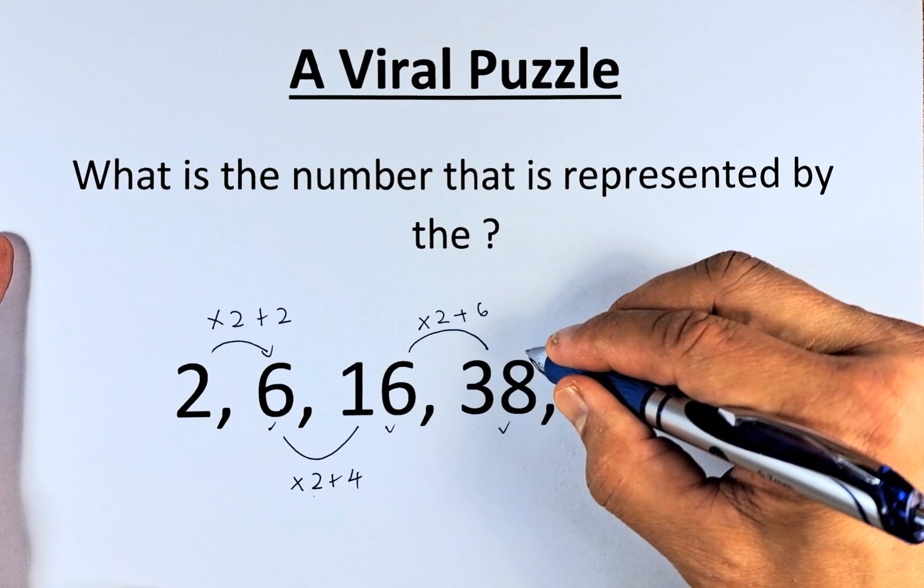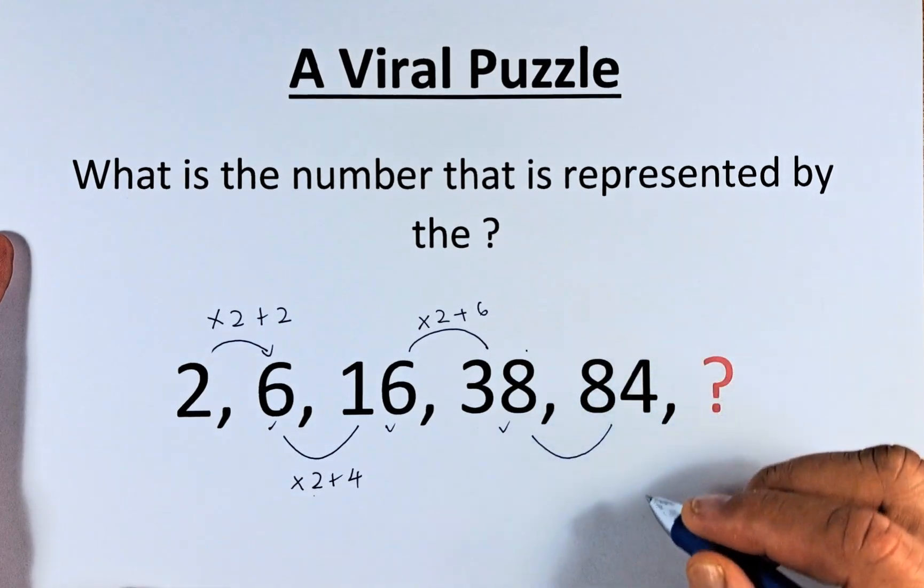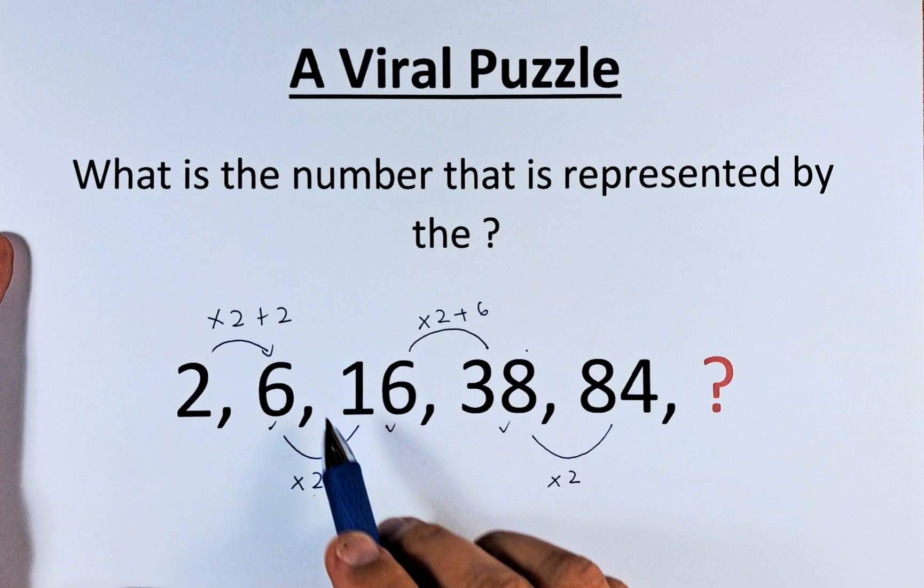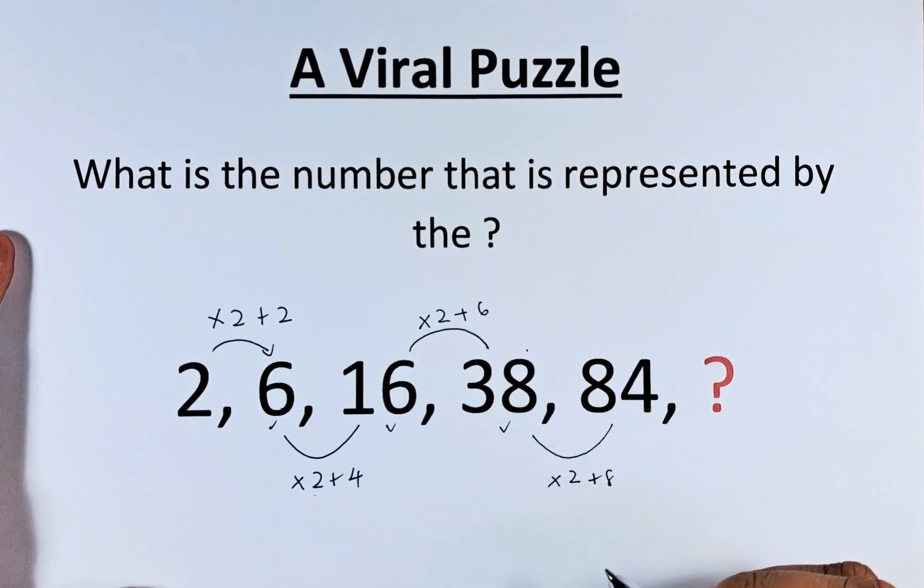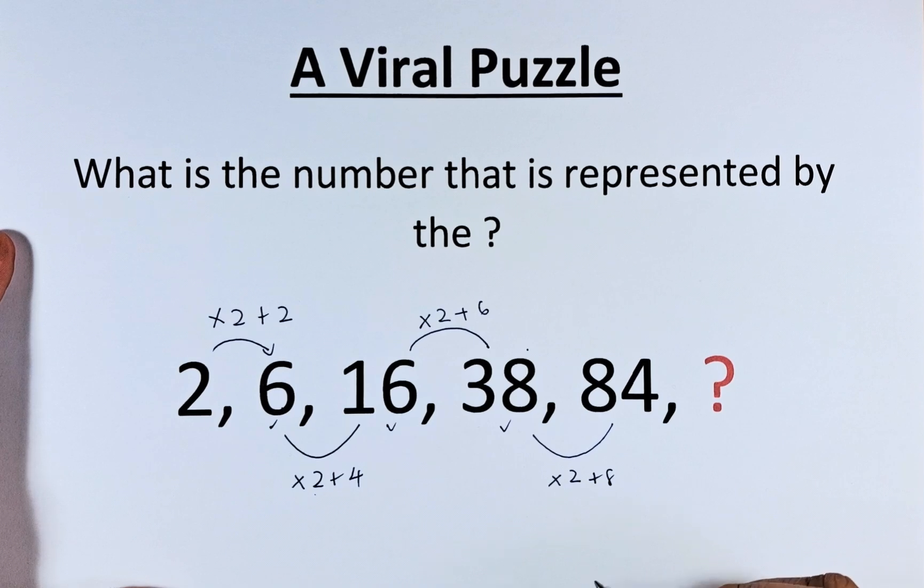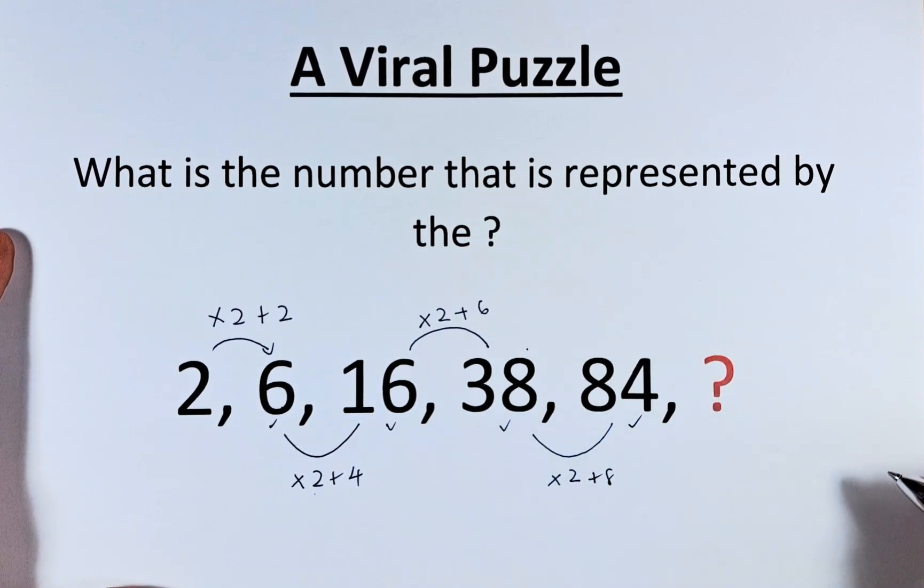So what about 38 to 84? Again, we're going to multiply by 2, and we're going to add 2, 4, 6, so that must be adding 8. So 38 times 2 is 76, 76 plus 8 gives us 84.